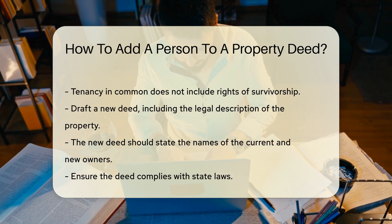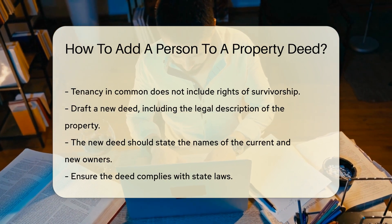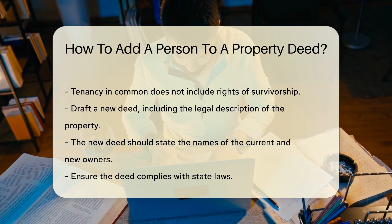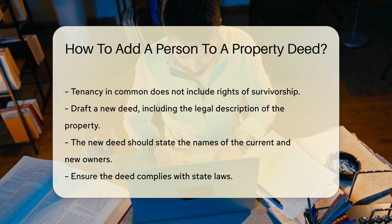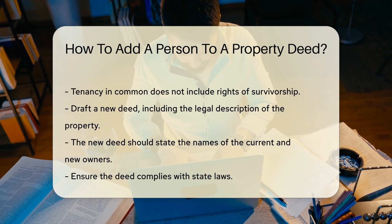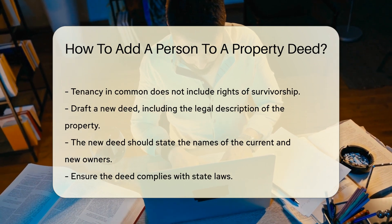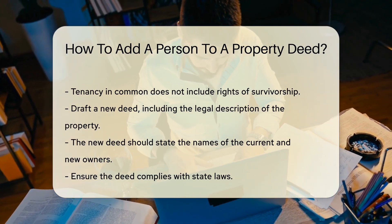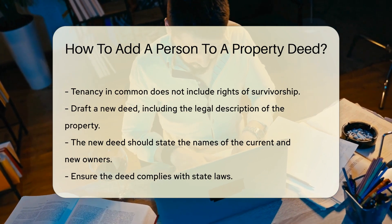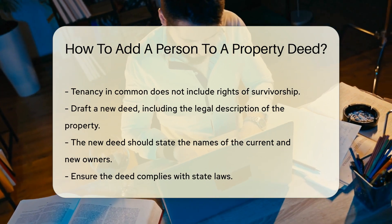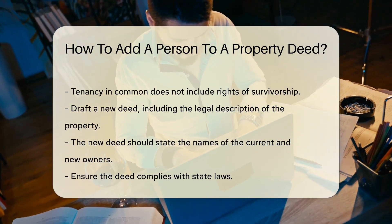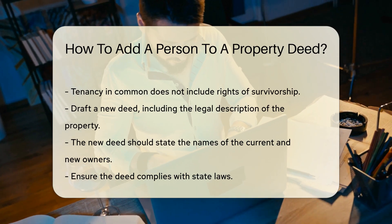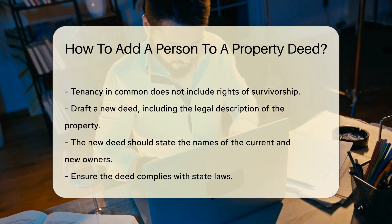After deciding the type of ownership, draft a new deed. This document must include the legal description of the property and state the names of the current and new owners. Ensure that the deed is properly formatted and complies with state laws.